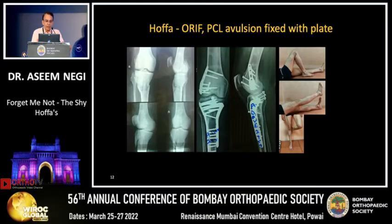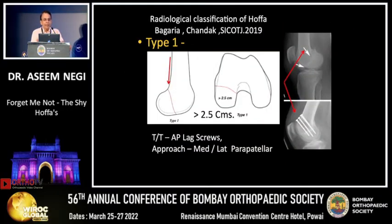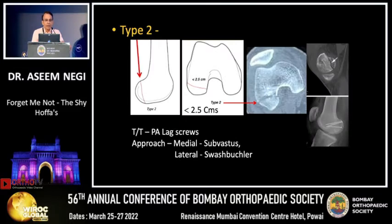An excellent classification has been given by Dr. Bagariyan Chandak. Type 1: fracture line passes parallel and close to the posterior femoral cortex, the Hoffa fragment is more than 2.5 cm, and you can easily lag it with AP lag screws by a parapatellar approach. Type 2: fracture line passes much behind the posterior femoral cortex, the fragment is less than 2.5 cm.